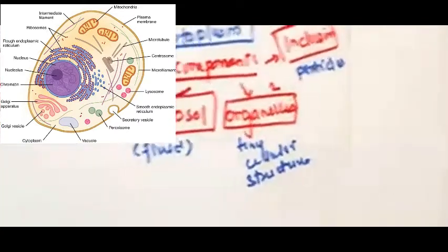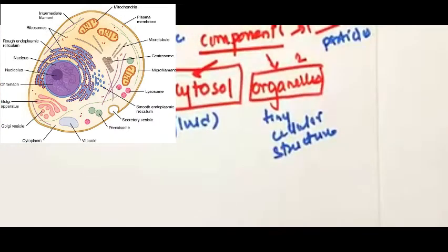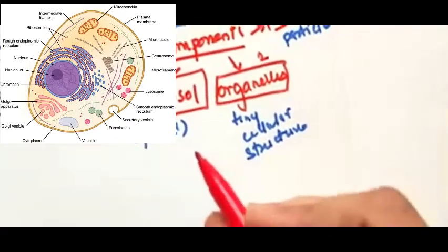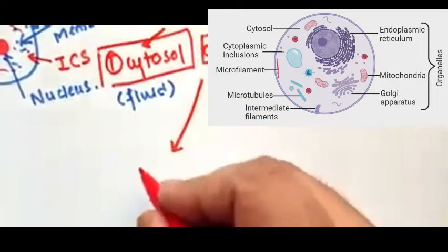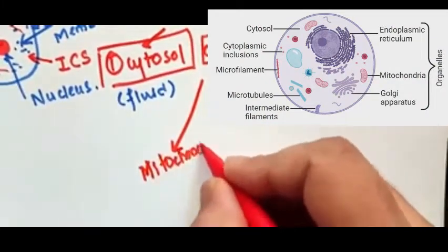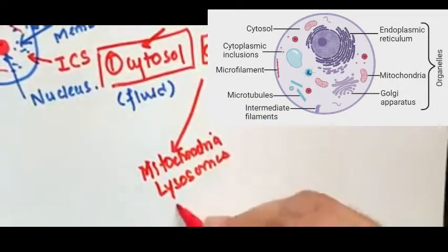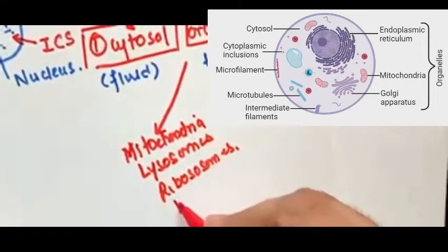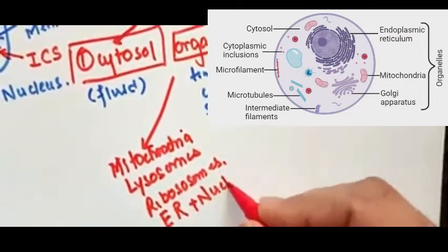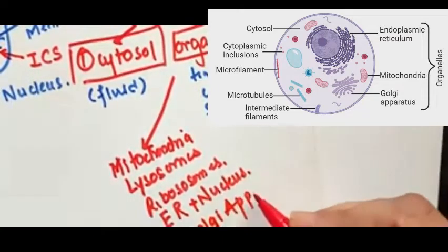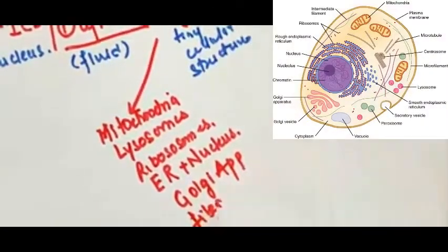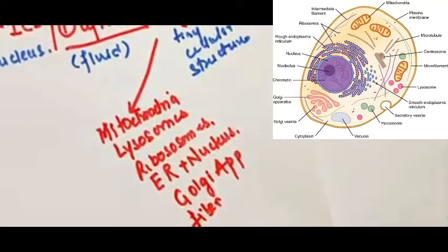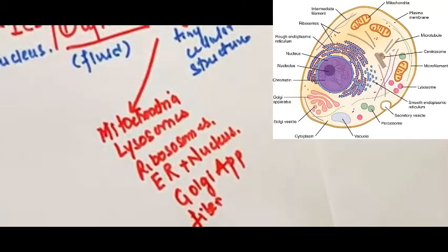There are many types of organelles within the cytoplasm. You also have a network of fibers that helps the cell maintain its shape and provides support for all these organelles.